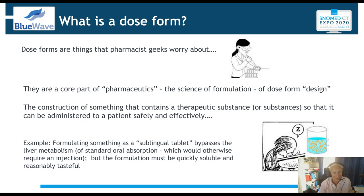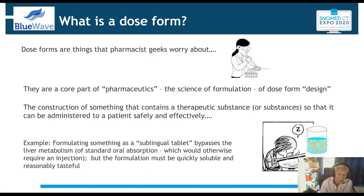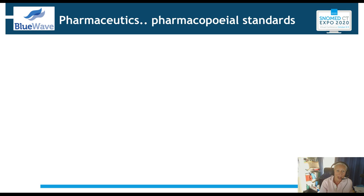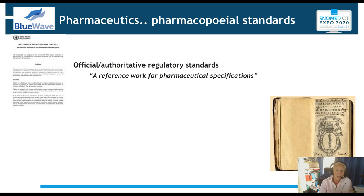An example: when we formulate something as a sublingual tablet rather than an oral tablet, it bypasses the liver metabolism and first-pass mechanism, which would considerably reduce the dose. A sublingual tablet needs to be much more quickly soluble. The science of pharmaceutics isn't necessarily the most exciting — I remember a lecture where an equation about how particles fall in an emulsion covered the entire blackboard, and by the end of my notebook you could see where I completely fell asleep.